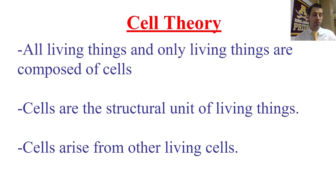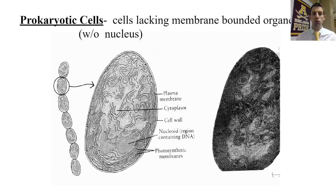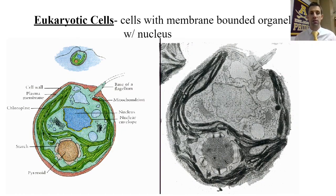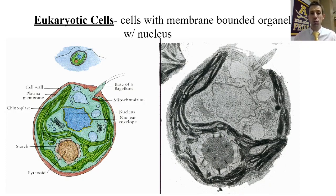There are two general varieties of cells. The first are prokaryotic cells, which are much more simplistic — things like bacteria are prokaryotic. They're smaller, less complex, do not contain a nucleus or other organelles, and are considered the very first types of cells. Eukaryotic cells — the type that plants, animals, fungi, and protists are made of — are larger and more complex because they contain organelles like a nucleus.